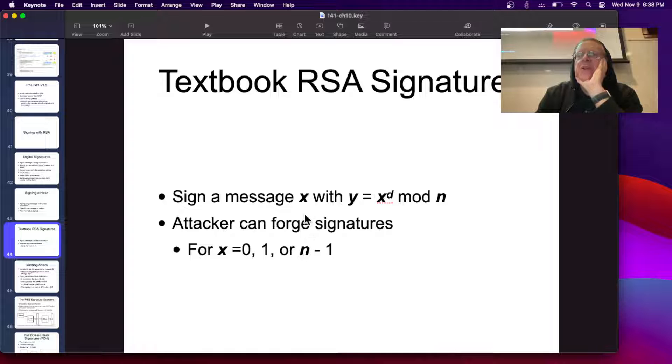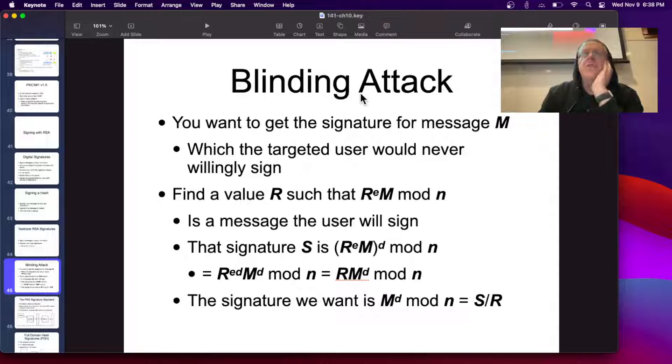So textbook RSA signatures, you just sign a message X with Y is X to the D mod N, and now, in principle, an attacker can forge signatures, some values like 0 and 1 for X, of course, will have an obvious, it doesn't matter what power you take, 1 to, or 0 to, you'll always get the same answer, and there's some similar issue with N minus 1. So in that case, the attacker can forge some valid signatures. And there's another one, too. If you want to get the signature for message M, which the user would never willingly sign, if you can find a value R, such that R to the E times M mod N is a message they will sign, then you can get them to sign this message, and you can calculate the other signature from it. So this is like the previous attack, because textbook RSA does such a simple mathematical exchange, you can use some of the information you know to forge signatures.